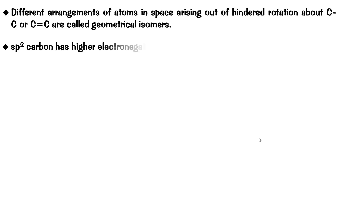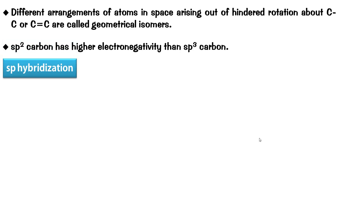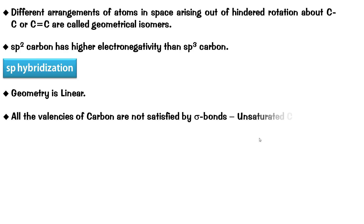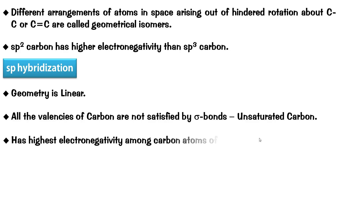The sp2 hybridized carbon definitely has higher electronegativity compared to the sp3 carbon, because it has more S content - 33% S content. The last hybridization in this video is sp hybridization: such a carbon has linear geometry, and its valencies are still not all satisfied by sigma bonds, making it an unsaturated carbon. Since the S character is 50%, it has the highest electronegativity among all the carbon atoms of various hybridizations. This video is about the various hybridizations of carbon and how they affect properties. In Part 2, we are going to start with various effects, beginning with the inductive effect. Thanks for watching.